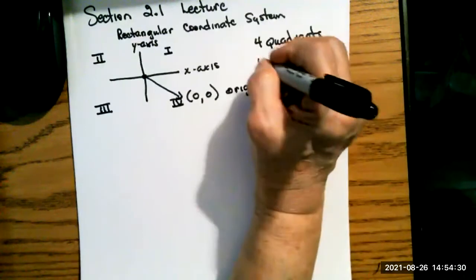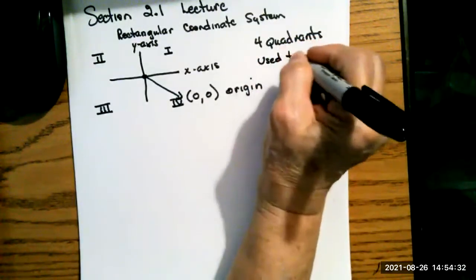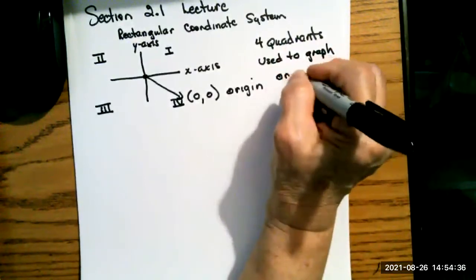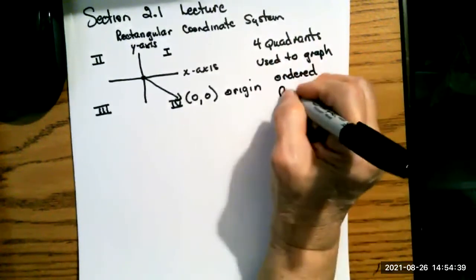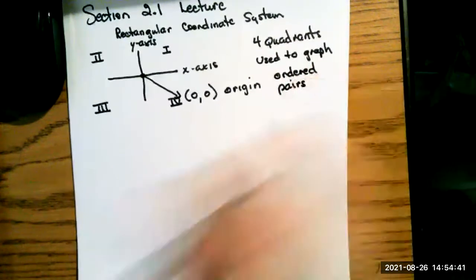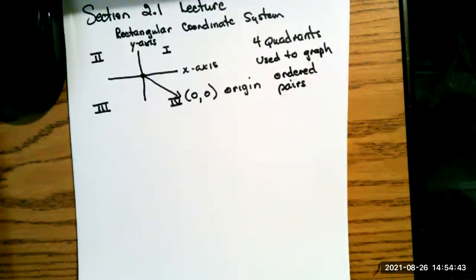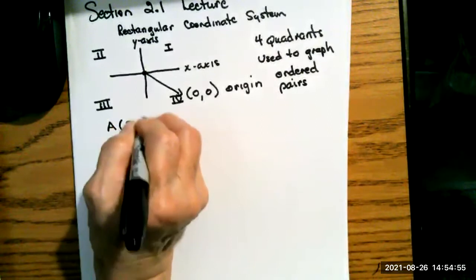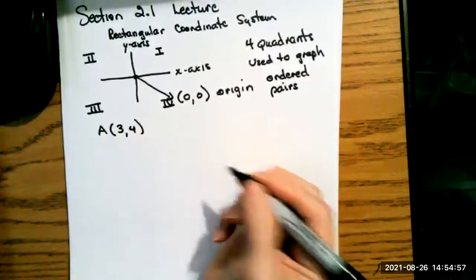This is used to graph ordered pairs. And when ordered pairs are put together, sometimes they will make functions or lines or absolute value graphs or different kinds of graphs that we'll be using in our class. Let's talk about some points. If I had the point A(3,4), and I want to know what quadrant it's in...